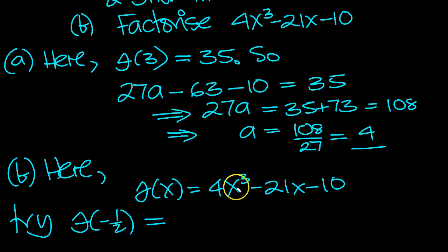Try f of minus a half. Hopefully that will work, because we get minus a half cubed, which is an eighth. 4 over 8 is a half. But it's minus cubed, so there's a minus. Minus in here, times another minus is a plus. 21 over 2 then, 21 halves minus 10, which is 20 halves.